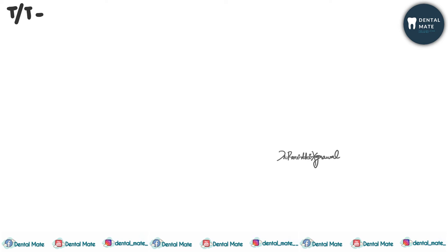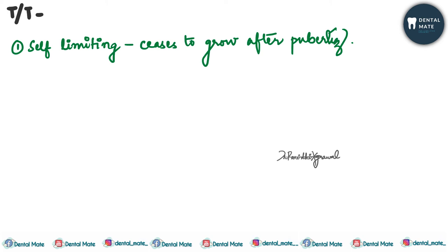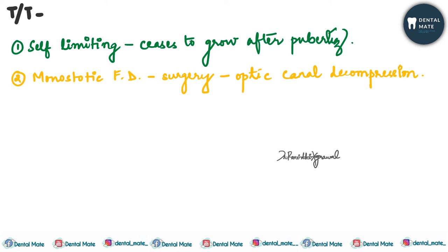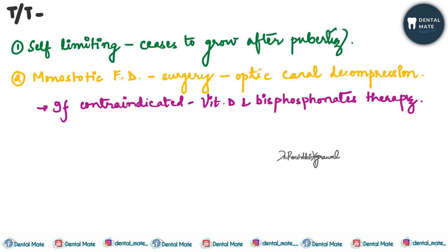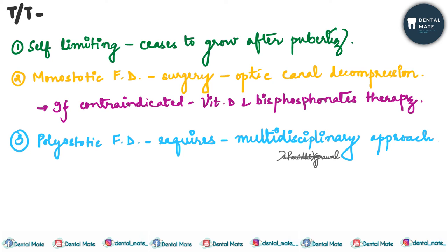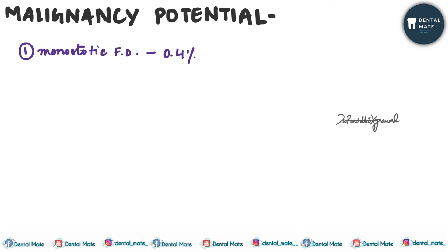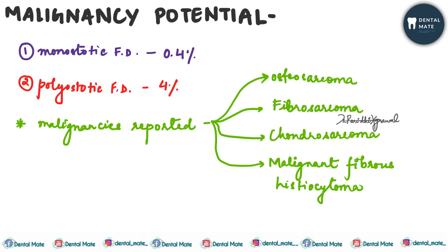Regarding treatment: fibrous dysplasia is a self-limiting disease and ceases to grow when the patient reaches puberty. For the monoostotic type, cosmetic surgeries such as optic canal decompression can be opted for. If surgery is contraindicated, vitamin D and bisphosphonate therapy can be given. The polyostotic type requires a multidisciplinary approach. The malignancy potential is 0.4% for monoostotic and around 4% for the polyostotic type. Reported malignancies include osteosarcoma, fibrosarcoma, chondrosarcoma, and malignant fibrous histiocytoma.